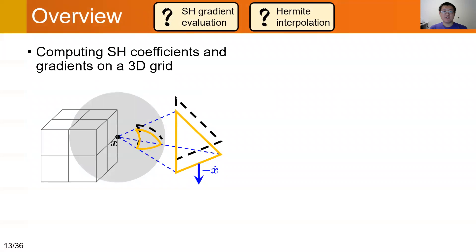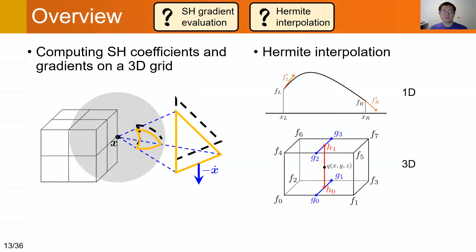The first step is computing SH coefficients and gradients on the 3D grid points. The second step is interpolating SH coefficients at other shading points inside the grid. We use an accurate tricubic Hermite interpolation, leveraging the SH gradients.